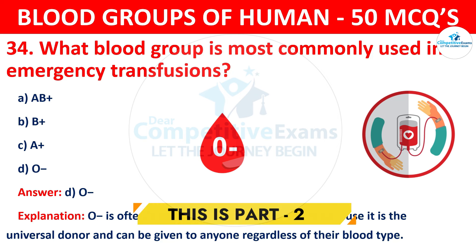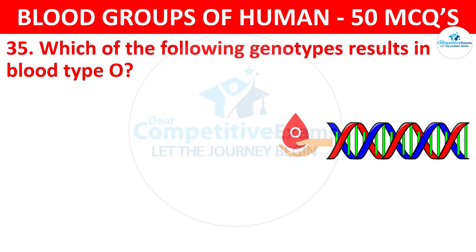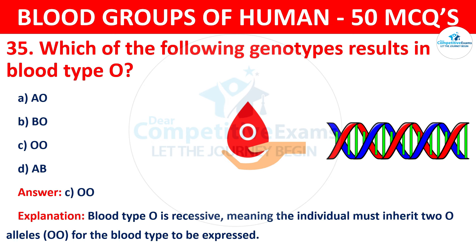Question 35: Which of the following genotypes results in blood type O? The correct answer is C, OO. Blood type O is recessive, meaning the individual must inherit two O alleles for the blood type to be expressed.